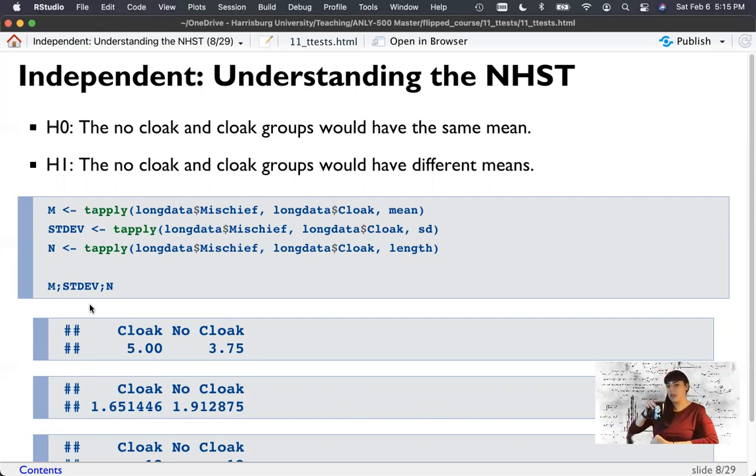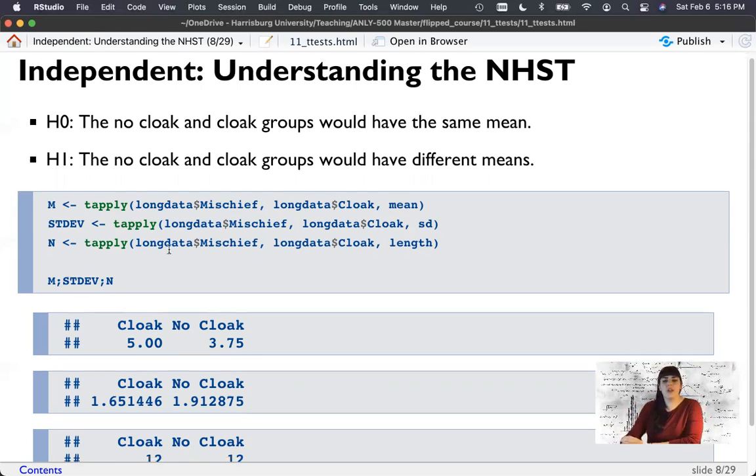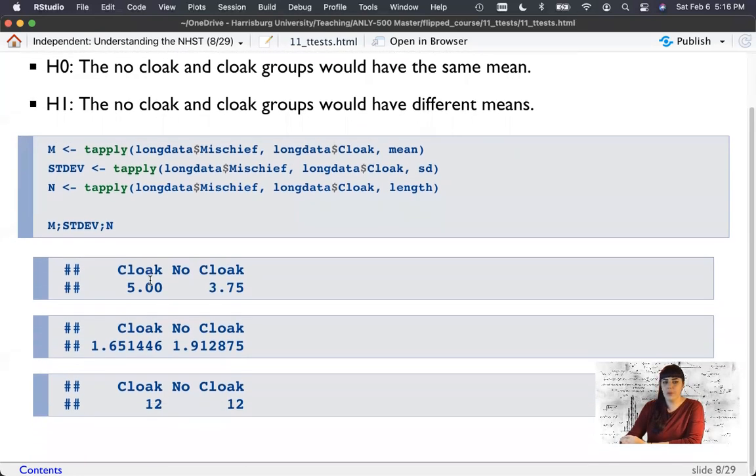So the first thing I did here was go back to that t-apply thing we learned weeks ago. And I printed out the mean standard deviation and sample size for each group just to see. So our cloak group has five and our no cloak group has 3.75. And the question here is, is that statistically different? Just numerically, yes, those two numbers are different things. But is that different enough that we would consider those not equivalent? Can I find enough evidence to reject the null and say those things are not equal?